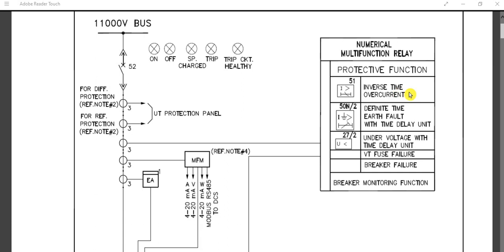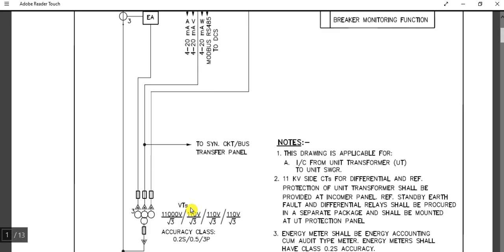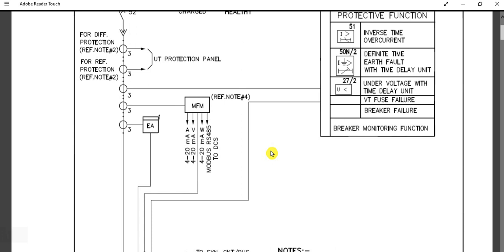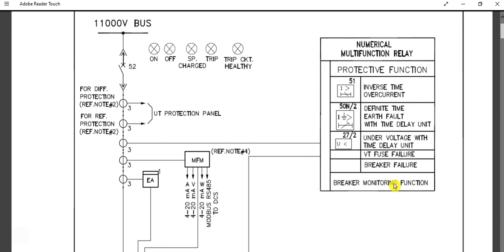The protection functions of the numerical multi-function relay are: 51 — inverse time phase overcurrent with IDMT characteristic; 50N/2 — definite time earth fault relay with time delay; 27/2 — undervoltage relay with time delay. Also monitored are VT fuse failure and VT healthiness on the secondary side. Breaker monitoring functions are also included in this numerical multi-function relay.